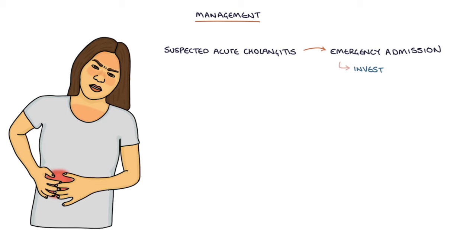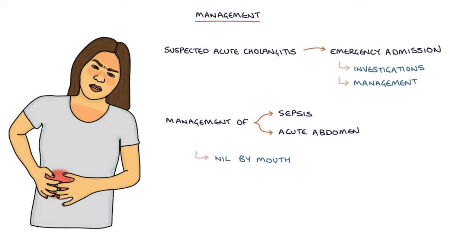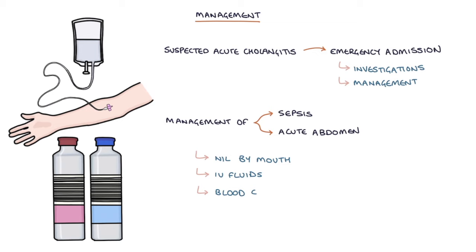Patients with suspected acute cholangitis need emergency admission for investigations and management. Patients need acute management of sepsis and acute abdomen. This includes making them nil by mouth, giving IV fluids, taking blood cultures, giving IV antibiotics according to local guidelines, and involving seniors and potentially the high dependency unit or the intensive care unit.